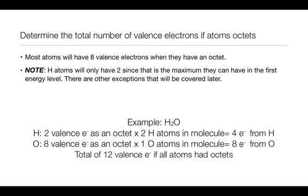If we look at the oxygen, it's going to have eight valence electrons if it were to have an octet. There's only one oxygen atom, so that gives us a total of eight valence electrons from oxygen that are contributing to the total of 12 for all the atoms if they were to have an octet.